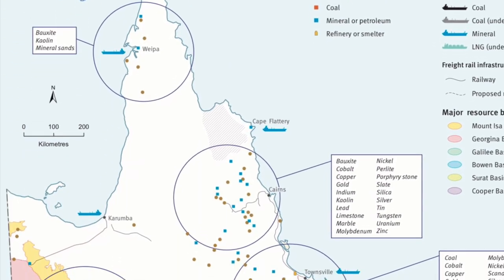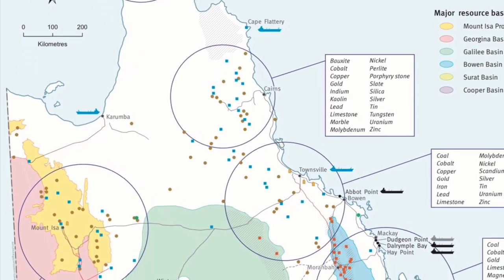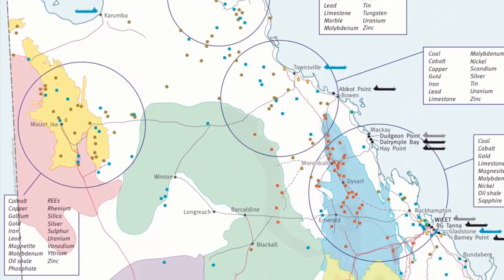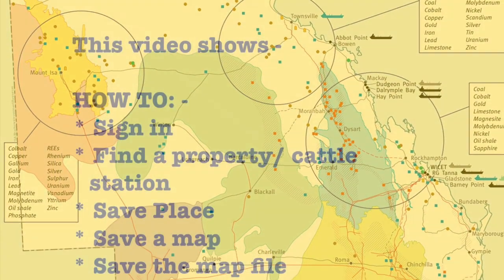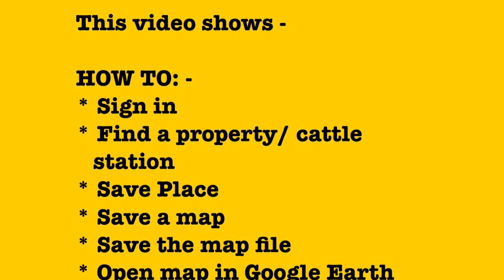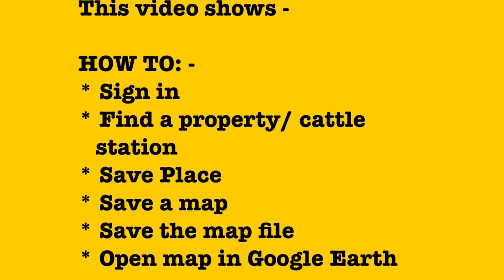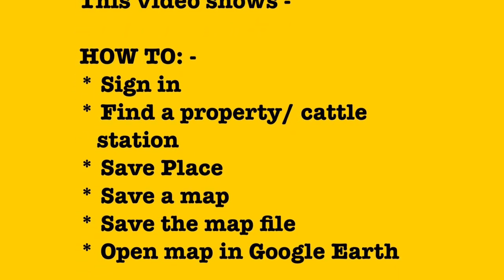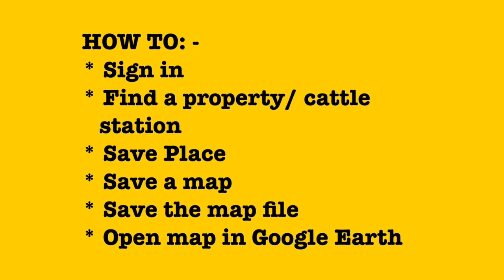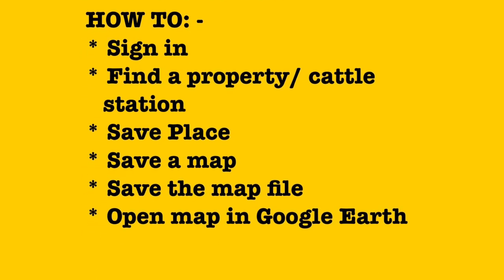This part two video follows on from that and covers how to sign into GeoResGlobe, how to find a property or a cattle station, how to save a place, save a map, and how to save a map file and open it in Google Earth.